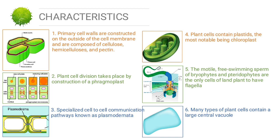The last characteristic: many types of plant cells contain a large central vacuole — a water-filled volume enclosed by a biomembrane known as the tonoplast — that maintains cell structure, controls movement of molecules between the cytosol and sap, and stores useful materials and degraded proteins and organelles.